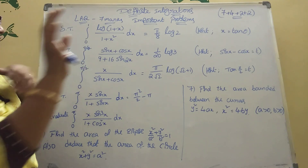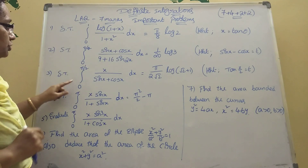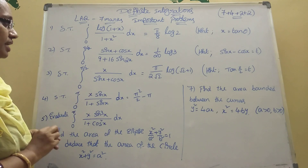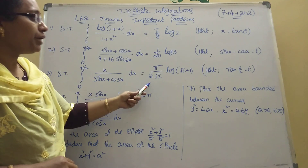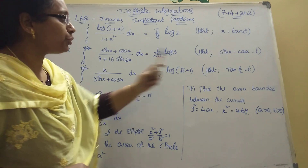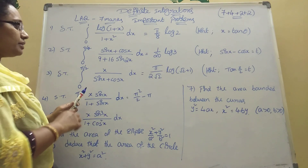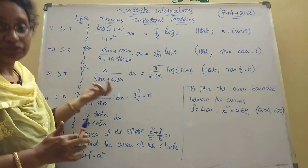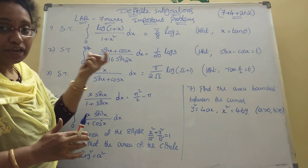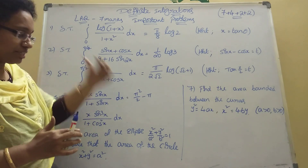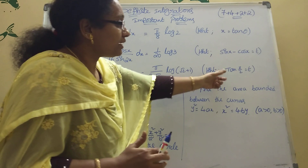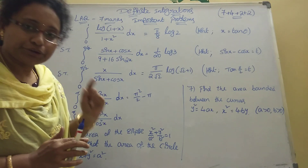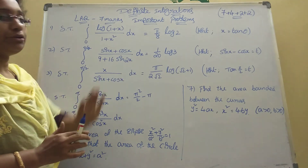Third one: integration from zero to π/2 of x divided by (sin x + cos x) dx equals (π / 2√2) log(√2 + 1). Here apply the formula: integration from zero to π/2 of f(x) equals f(a − x), then use the substitution tan(x/2) = t. You will easily get the value.